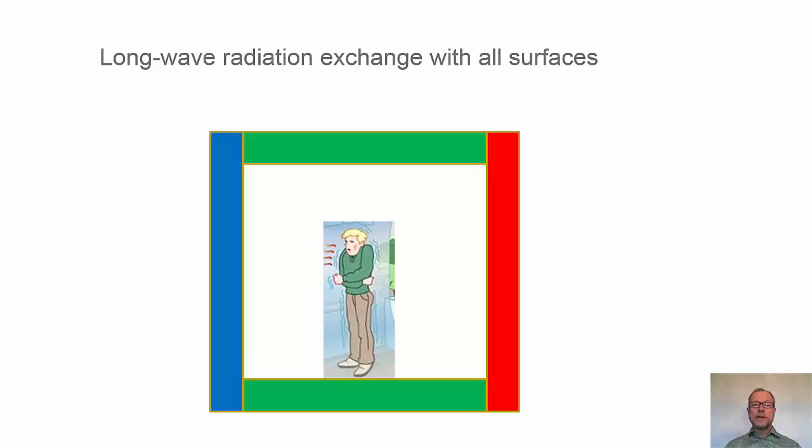We start with the longwave radiation exchange. The person here is in a room and the blue areas represent walls that are colder than the body, and the red bar represents walls that are warmer than the body. The green one may be roughly the same as the surface temperature of the body.